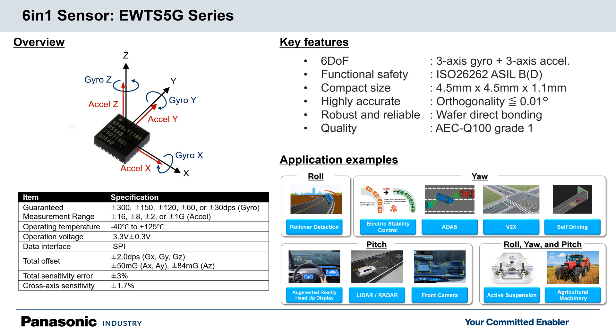Our 6in1 sensor is suitable for a variety of applications. For example, applications that detect roll, yaw, pitch, or even all of them.